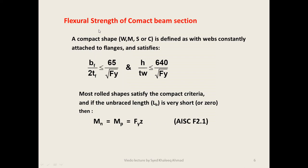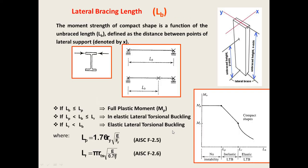The flexural strength of a compact beam section is determined based on two criteria. A compact shape is defined by bf divided by 2tf less than or equal to 65 divided by the square root of Fy for the flange, and h divided by tw less than or equal to 640 divided by the square root of Fy for the web. Most rolled shapes satisfy the compact criteria as listed in the AISC steel table. If the unbraced length is very short or zero, we use Mn equal to Mp, which equals Fy times Z.